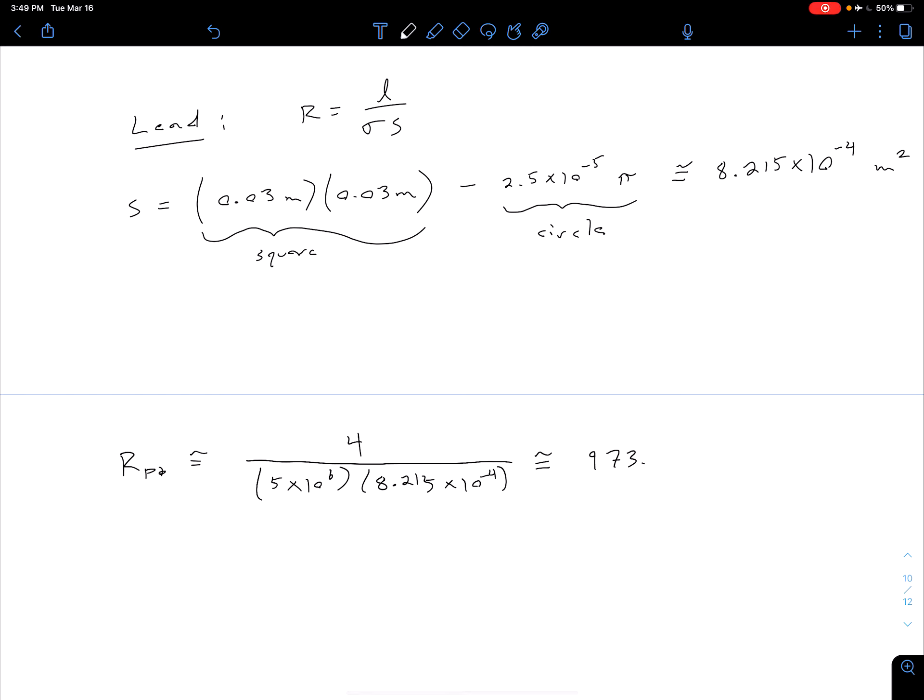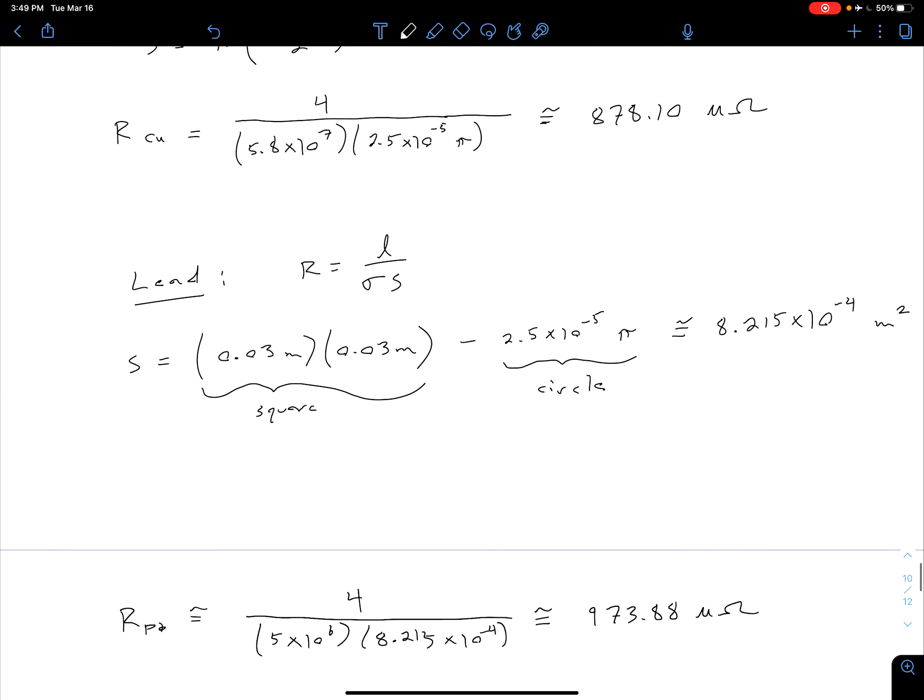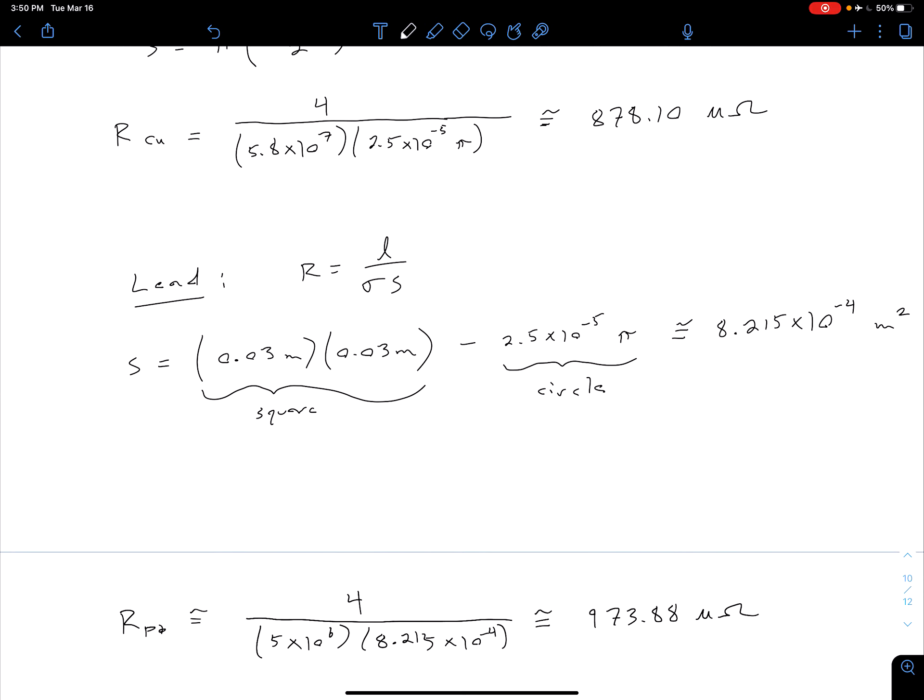Our cross-sectional area is 8.215 times 10 to the minus 4th meters squared. Plugging that in, we get about 973.88 micro-ohms. Again, a very small resistance, which is to be expected because this is a metal.